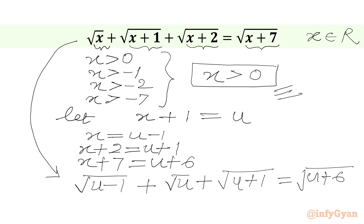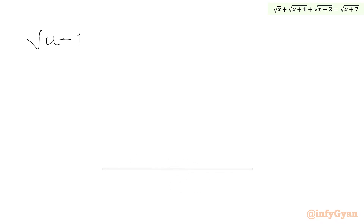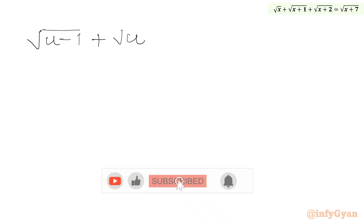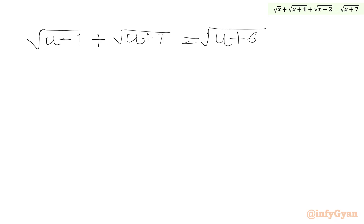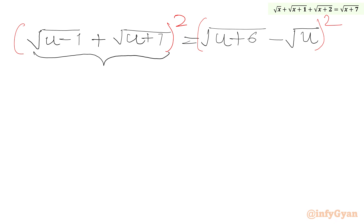We will subtract square root u from both sides, taking it to the RHS. So we get: square root of (u minus 1) plus square root of (u plus 1) equals square root of (u plus 6) minus square root u. Now we are going to square both sides, applying the (a+b)² identity on the LHS and (a-b)² identity on the RHS.